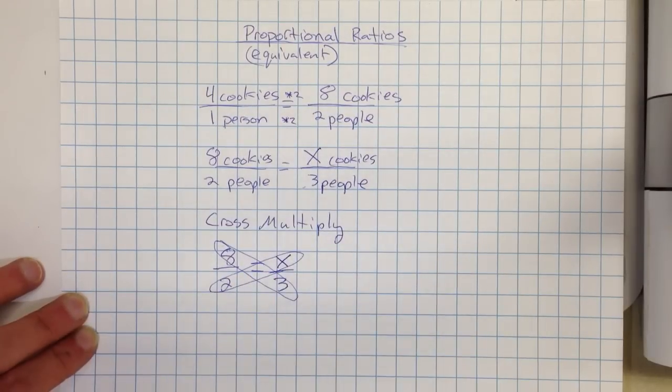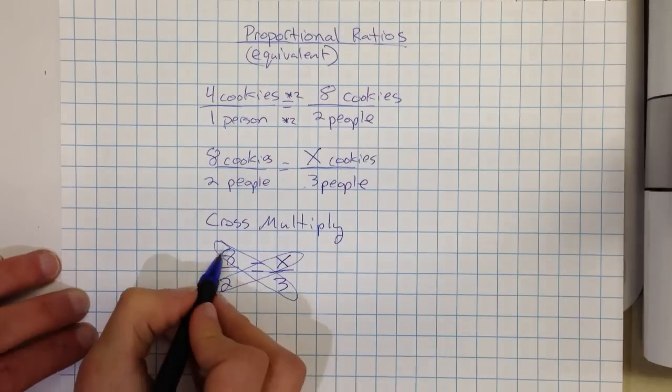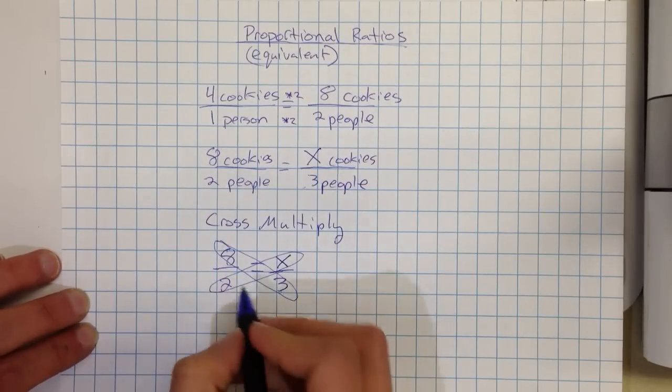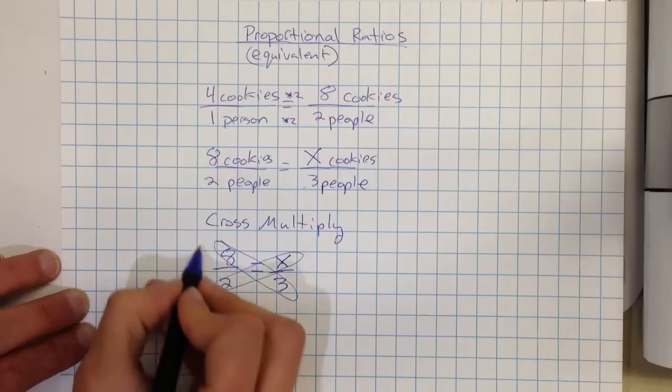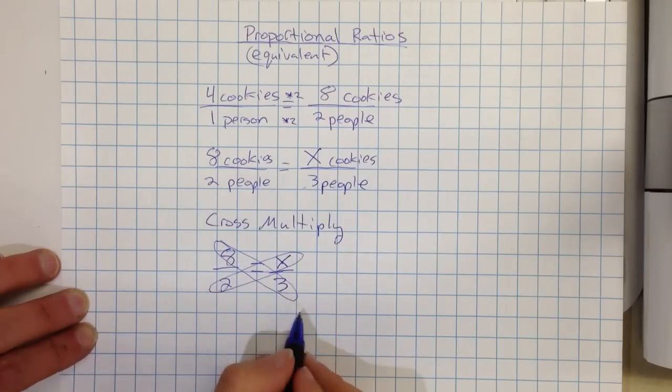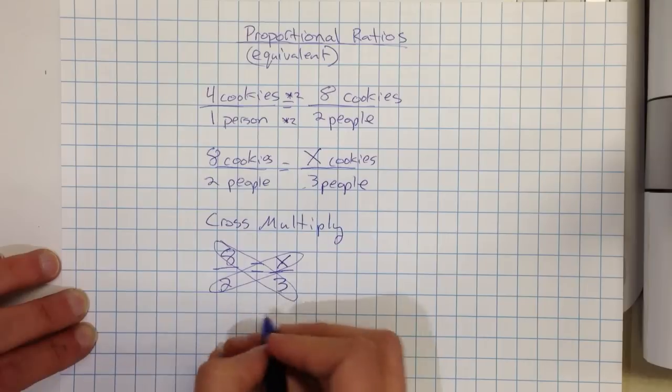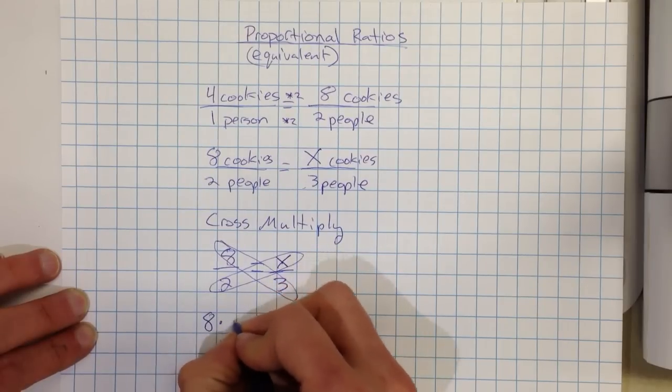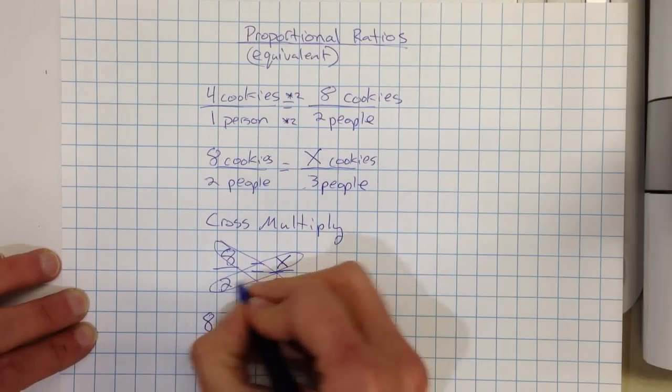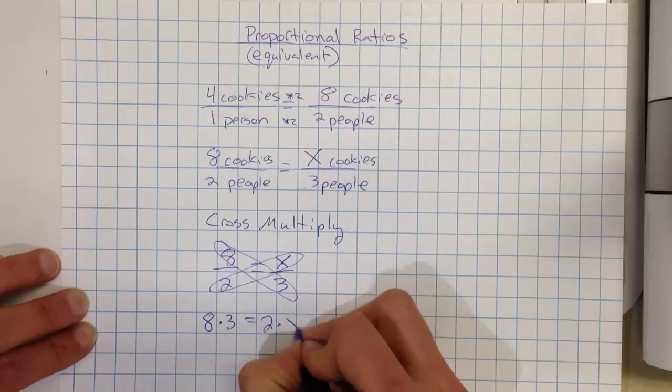So I'm going to make sort of these shapes that I like to draw at least when I'm first starting this, just to remember exactly which numbers I'm grouping. So I will group this eight and the three together, and I will group this two and the X together. I'm going across the equal sign. You can only do this when you're going across an equal sign. So I would rewrite my problem as eight times three equals two times X.